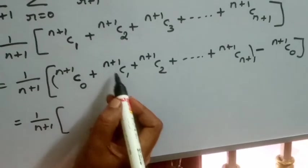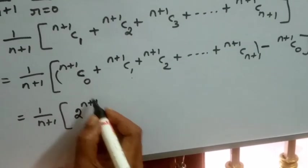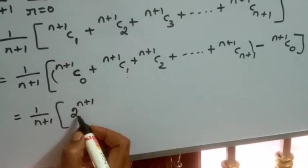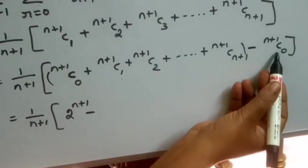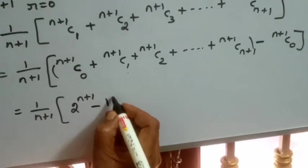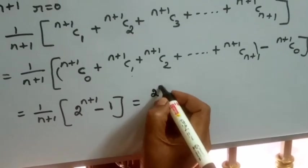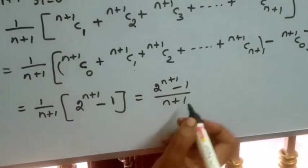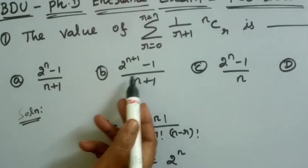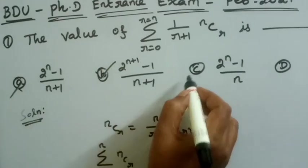The full sum N plus 1 C0 plus N plus 1 C1 plus ... plus N plus 1 C N plus 1 equals 2 power N plus 1. Subtracting the first term N plus 1 C0, which equals 1, we get 2 power N plus 1 minus 1. Dividing by N plus 1, the final answer is 2 power N plus 1 minus 1 divided by N plus 1. Option B is correct.